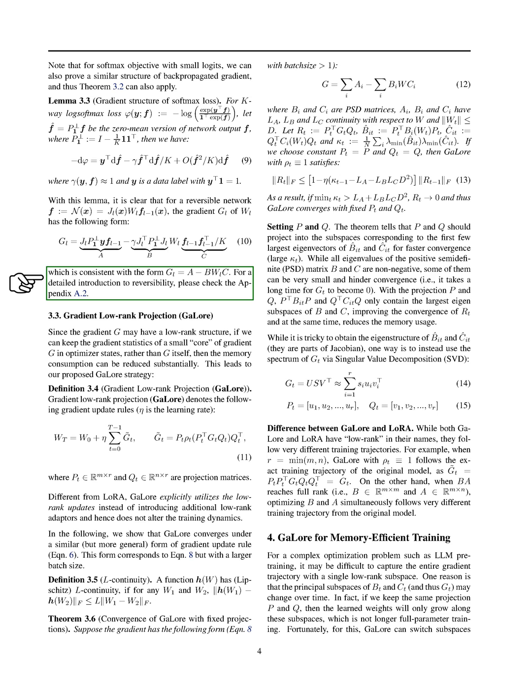Section: Gradient Low-Rank Projection GaLore. In this section, we introduce the Gradient Low-Rank Projection GaLore technique. We consider that the gradient G may have a low-rank structure. By maintaining the gradient statistics of a small core of gradient G in optimizer states instead of the entire G itself, we can significantly reduce memory consumption.